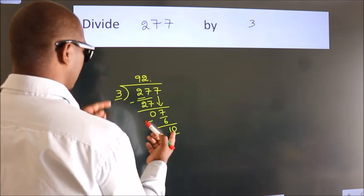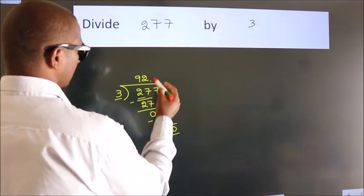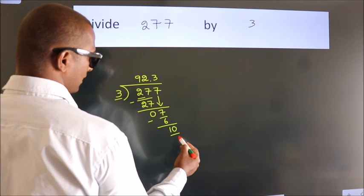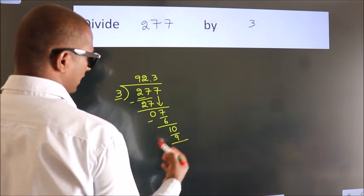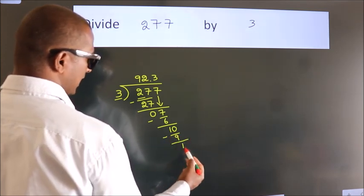A number close to 10 in the 3 table is 3 threes are 9. Now we subtract. We get 1.